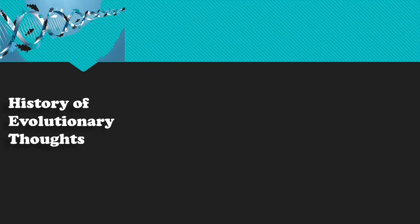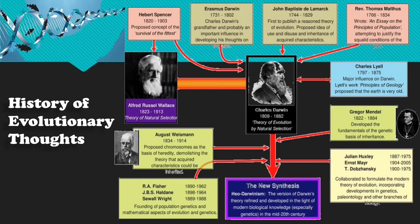The history of evolutionary thought involves the recognition that species change over time and understanding how such processes work. Many biological ideas proposed during the past 150 years built on Darwin's insights, with some scientists agreeing and others disagreeing with his evolutionary model. Darwin's genius was providing a natural explanation for the organization and functional design of living beings, with natural selection accounting for adaptive organization, evolutionary change through time, and evolutionary diversification.